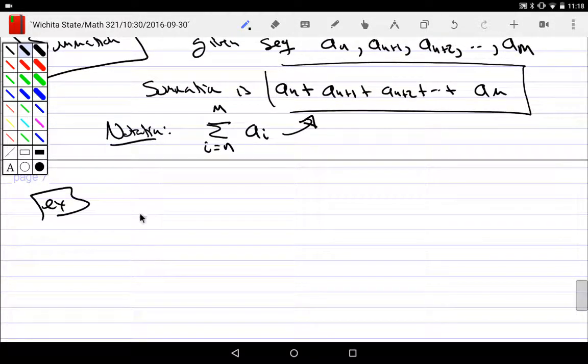So examples: what would happen if I summed from k equals 1 to n of k? What's the sequence? Plug in 1, what do I get? 1. Plug in 2, what do we get? 2, and 3, and then I go all the way up to n. And then what do I do with these? I add them.